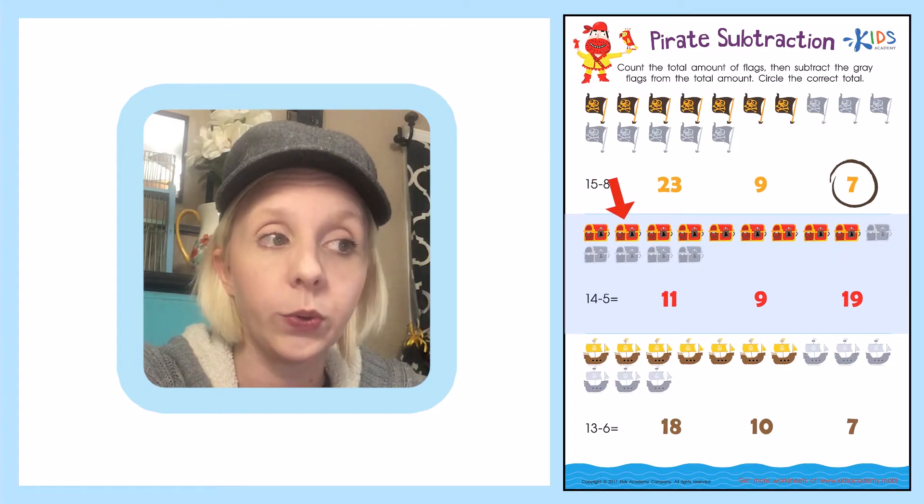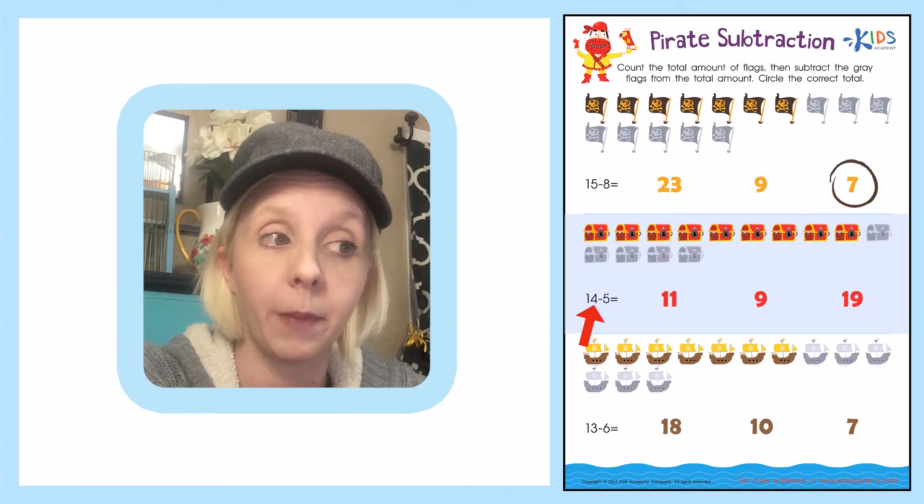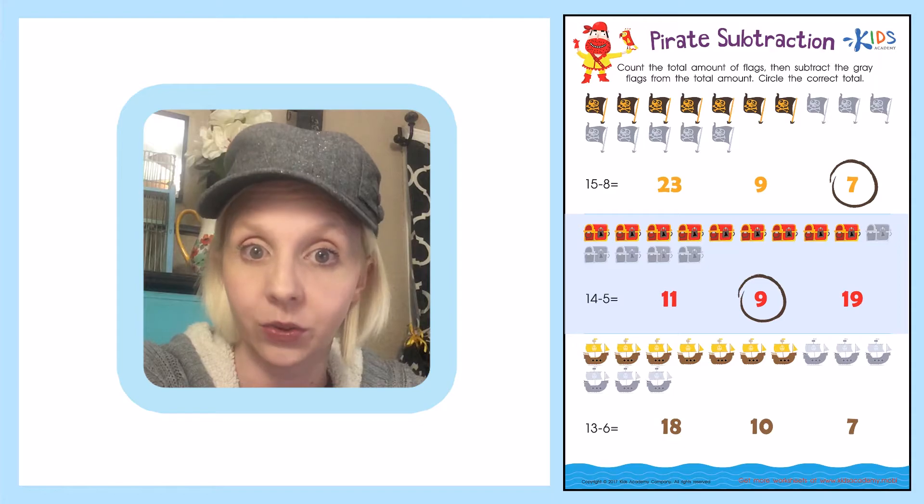1, 2, 3, 4, 5, 6, 7, 8, 9. So 14 minus 5 equals 9. And we're going to circle the correct answer right down here.